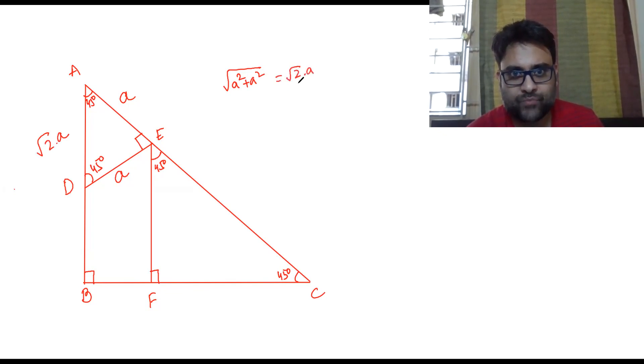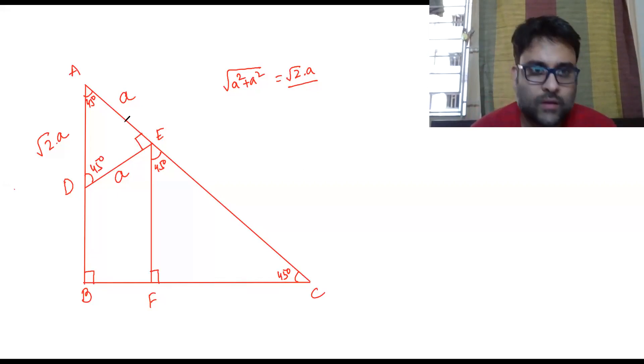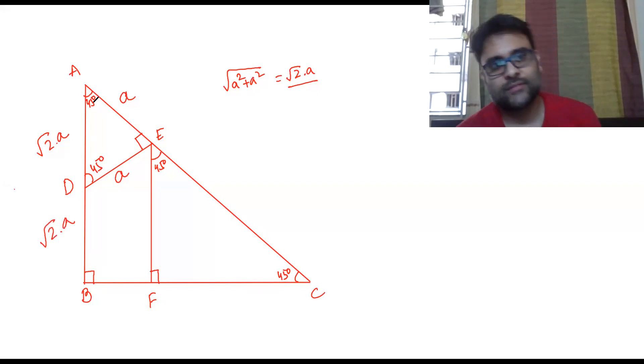D is the midpoint, so AD equals DB. Since this is isosceles, AB equals BC. So if AB is 2 root 2 times a, BC will also be 2 root 2 times a.